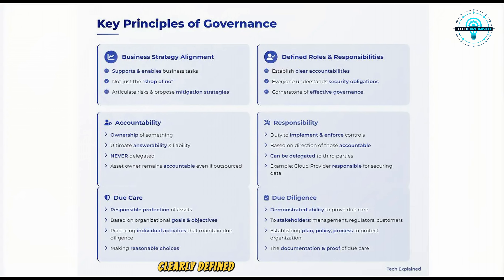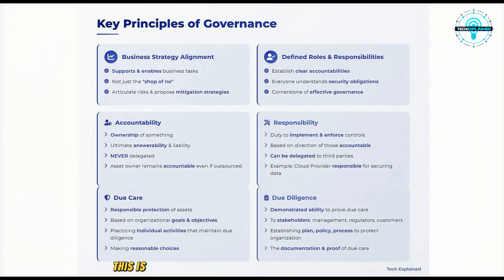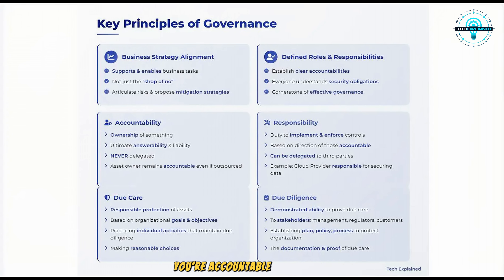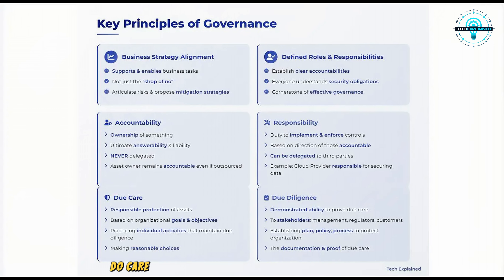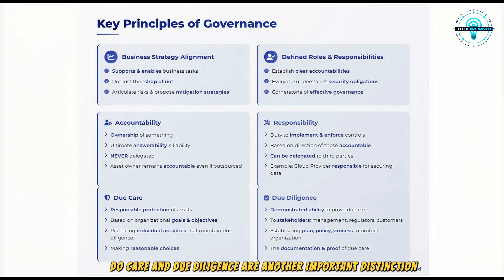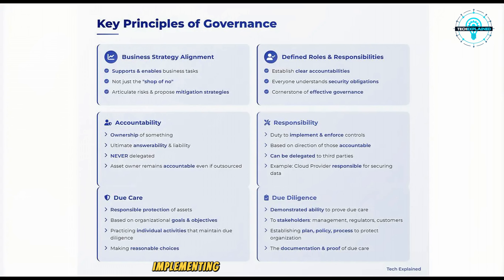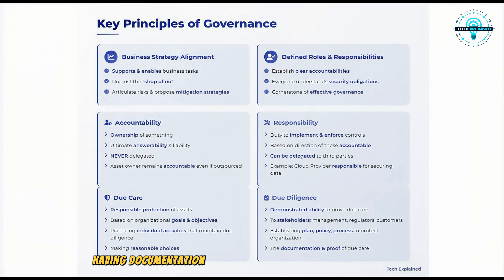Next, clearly defined roles and responsibilities — everyone needs to know what they're responsible for when it comes to security. This is where accountability versus responsibility comes in, a key distinction for the exam. Accountability means ownership; you can't delegate accountability. For example, if you're the owner of a house, you're accountable for its security even if you hire a security company — the company is responsible for implementing measures, but you're still accountable. Due care and due diligence are another important distinction: due care is about doing the right things, implementing reasonable security measures, while due diligence is about being able to prove you're doing the right things, having documentation and processes to show you're exercising due care.